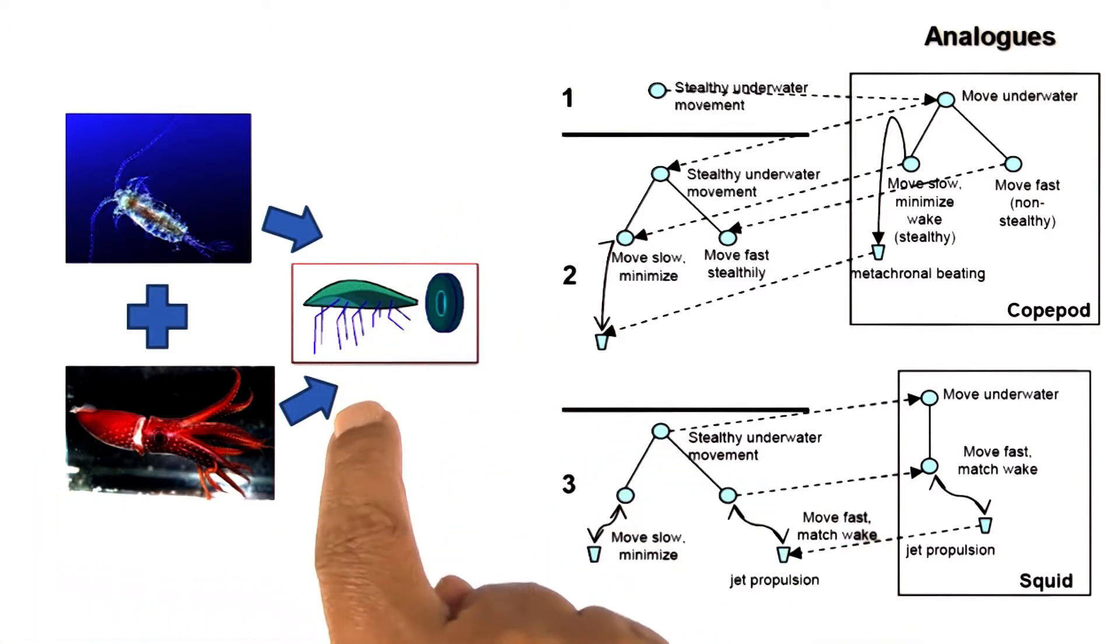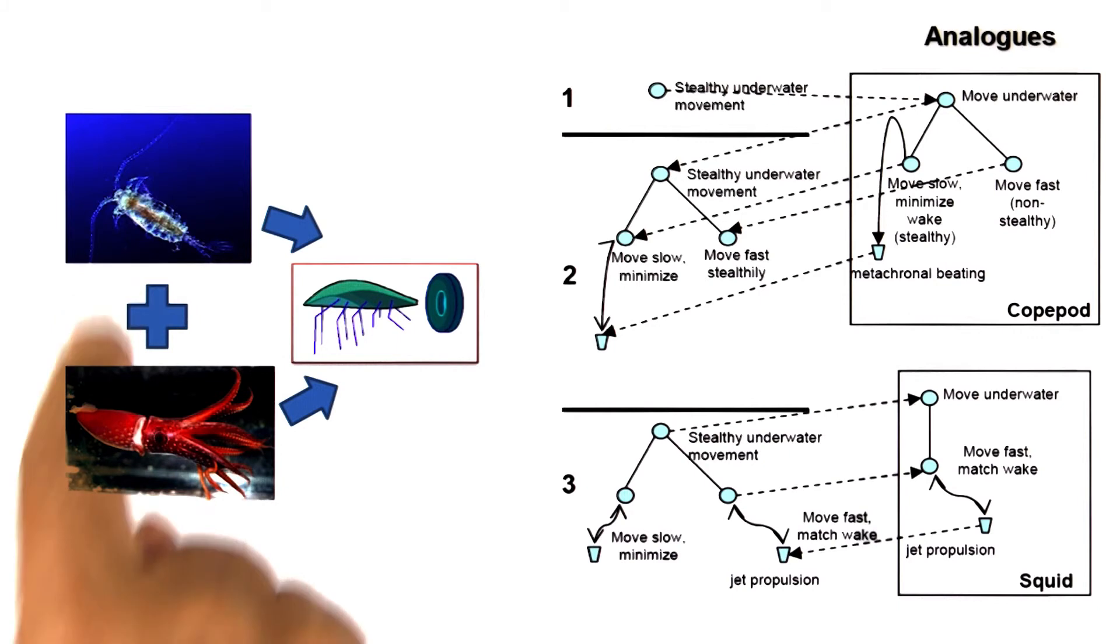Now we have created the design of a microbot, where part of the design comes from the design of the copepod, and the other part comes from the design of the squid. Instead of borrowing the design from one source case, we are borrowing parts of the design from multiple source cases. This is a compound analogy.